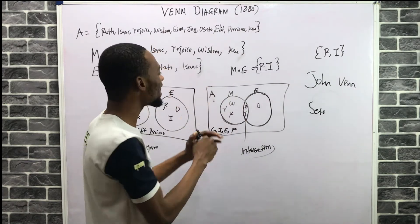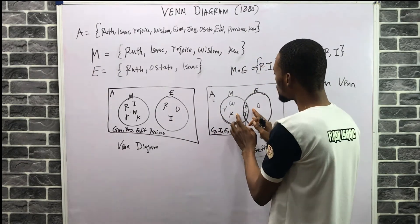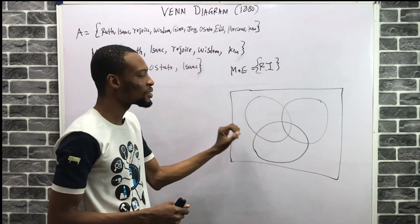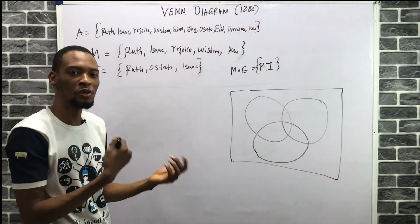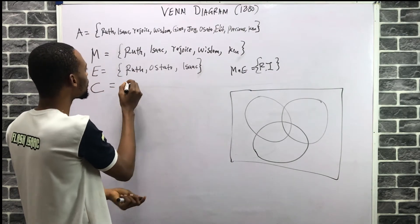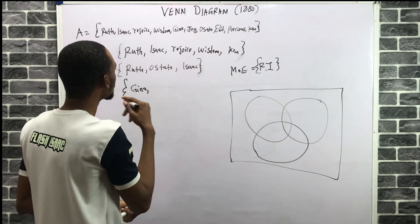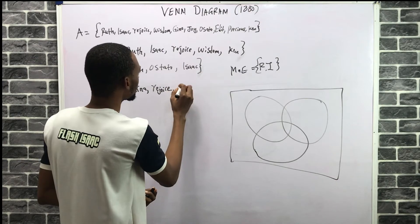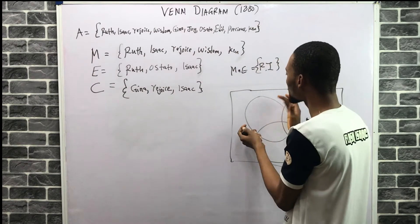This is the Venn diagram for two sets. At O-level, most of the time you focus on finding the union and the intersection. Here is a sample Venn diagram to represent three sets. We already have those who love mathematics and those who love English — now let's add a third: those who love computer. Those who love computer are Jina, Rejoice, and Isaac. So now we have three sets.